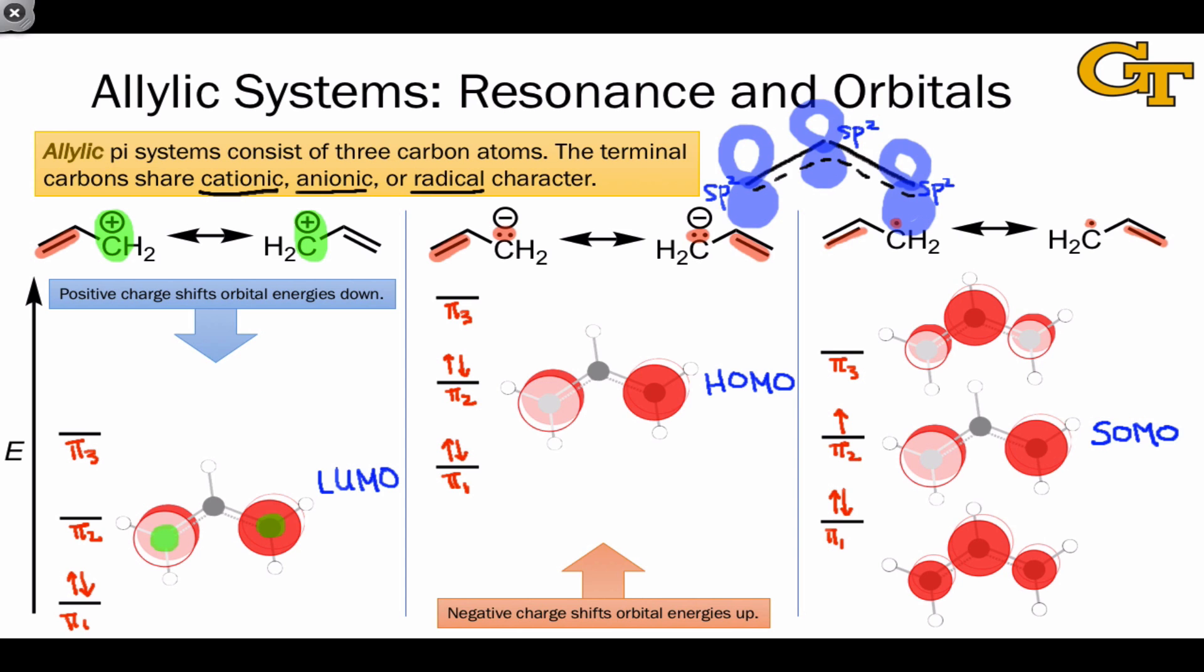Summing up, what we can say about the allylic pi system is that the shapes that you see on the right-hand side of this slide and the three orbital levels are characteristic of all of the allyl systems, but the number of pi electrons influences how the orbitals are occupied, and indirectly the orbital energies by changing the charge of the molecule.